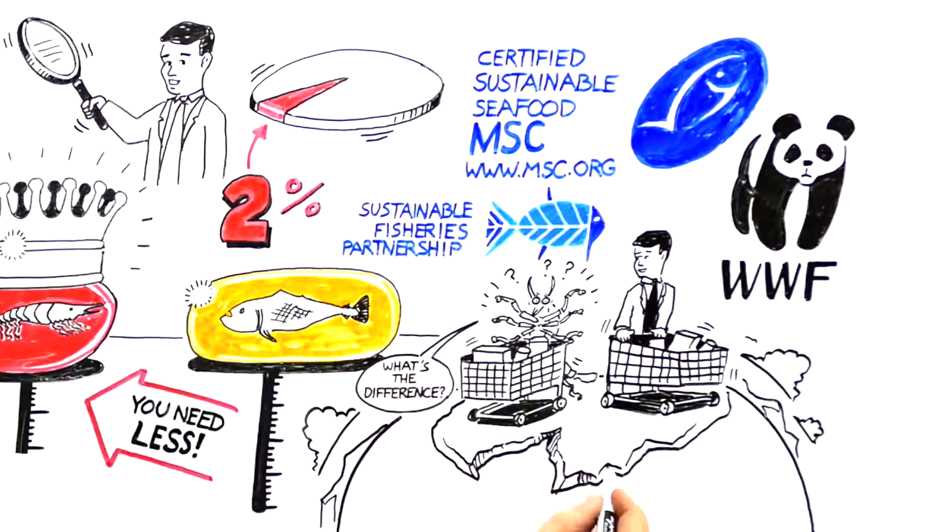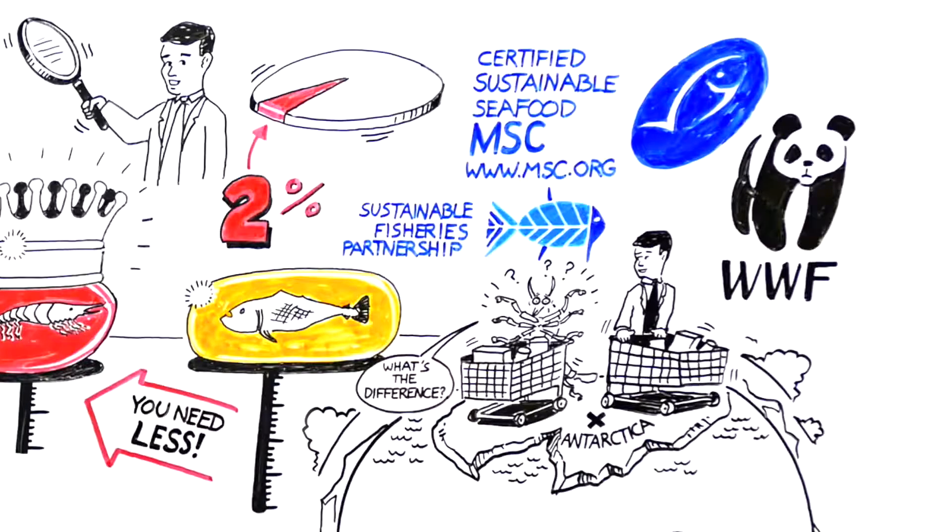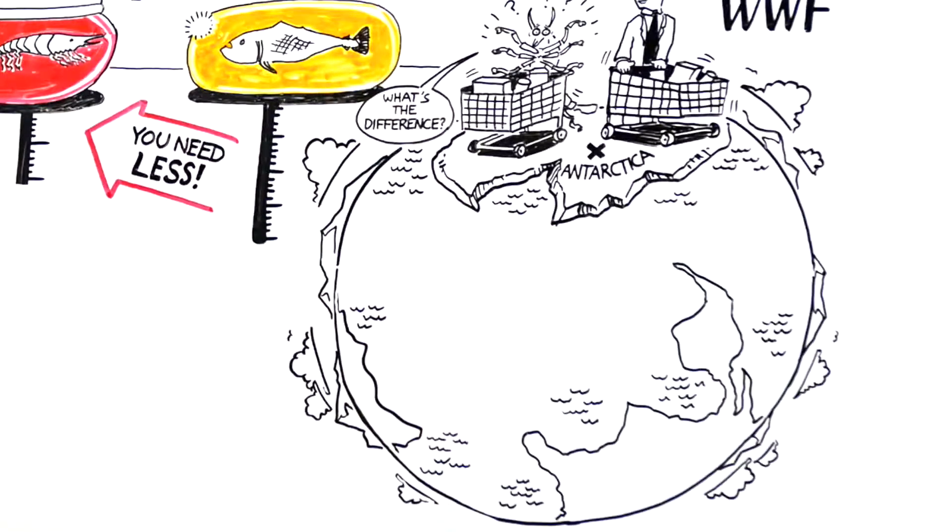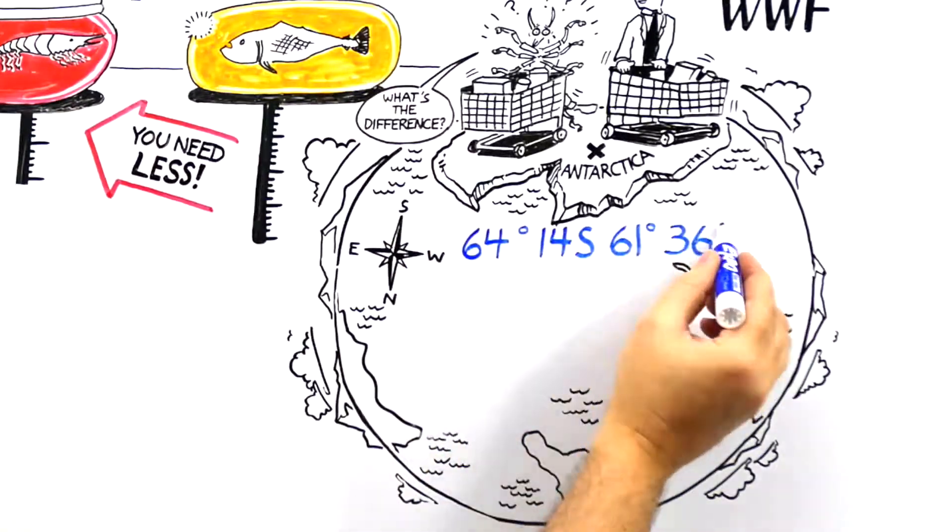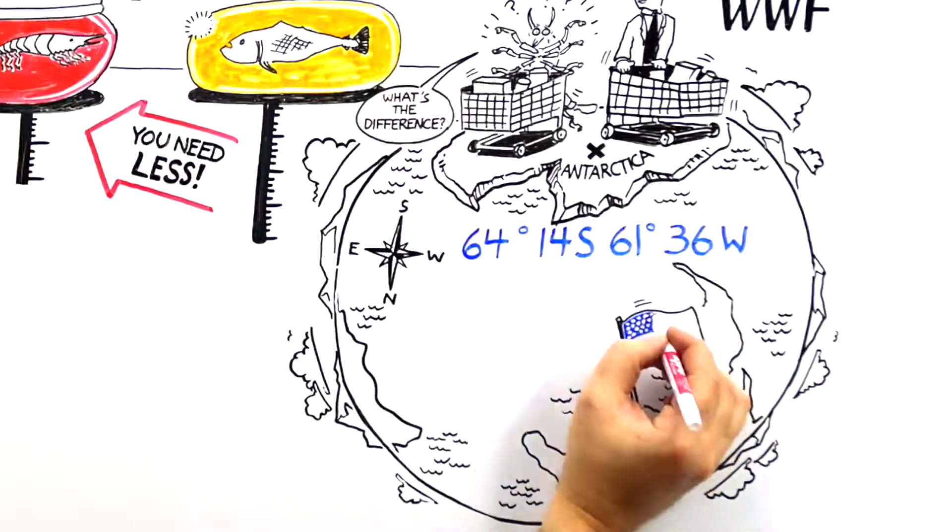Aker BioMarine, the company that produces Superba krill oil, maintains a 100% traceable supply chain that it also owns and controls. This means you can trace the development of our oil from catch to capsule. Seriously, check it out. 64 degrees, 14 south. 61 degrees, 36 west. This is one of the many locations in the Southern Ocean where we fish for our omega-3s. Did we also mention that it's made in the USA?